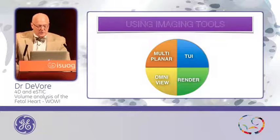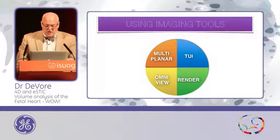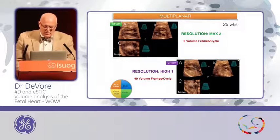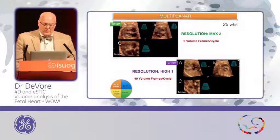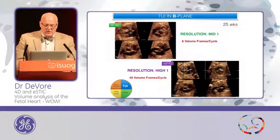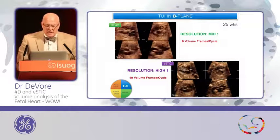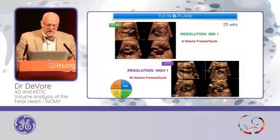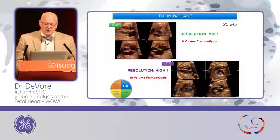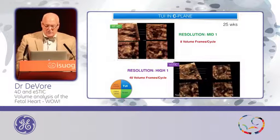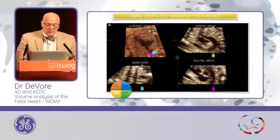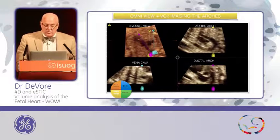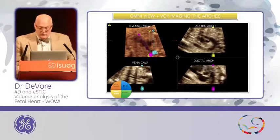Looking at other imaging tools — multi-planar, TUI, OmniView, and Render — the multi-planar view in the B and C planes has higher resolution than we've ever seen, allowing us to see more detail. These B-plane TUIs show the aortic arch, the short axis of the valves, the short axis of the outflow tracts — higher resolution and no artifact, and also in the C plane as shown previously. In OmniView, if you find the three-vessel view, you can drop a line down the main pulmonary ductus, the transverse arch, and the superior vena cava, and here you see the ductal arch, the aortic arch, and the IVC, nicely and quickly displayed.